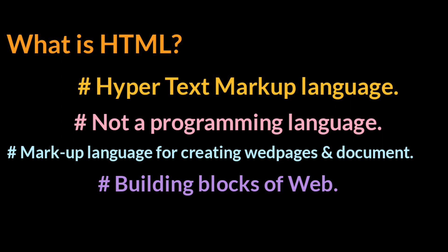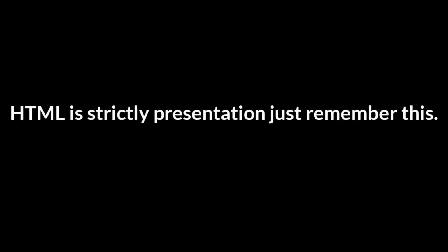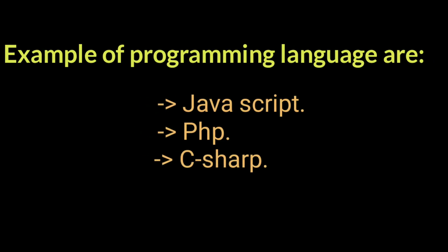HTML is used to display and format elements of a web page — things like images, text, paragraphs, headings, bullet lists, etc. It's strictly presentational, so just remember there is no logic and no actual programming. Examples of programming languages would be JavaScript, PHP, or C#, because they are intricate languages responsible for things like connecting to a database.